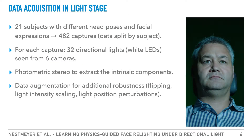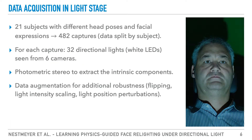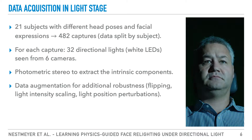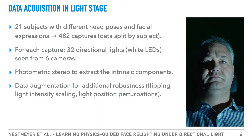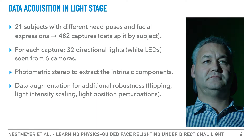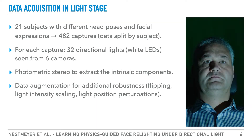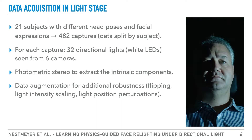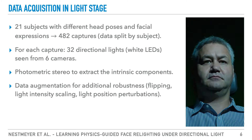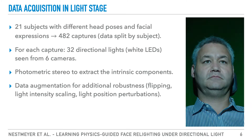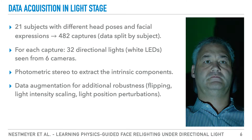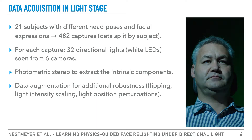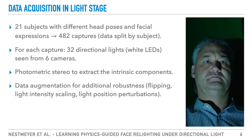To collect the necessary data, we built a light stage and captured 21 subjects with different head poses and facial expressions. This results in a total of 482 captures split into training, validation, and test set by subject. Each capture is lit consecutively with 32 directional lights and recorded with six calibrated cameras. One such capture, taking roughly half a second, can be seen on the right.